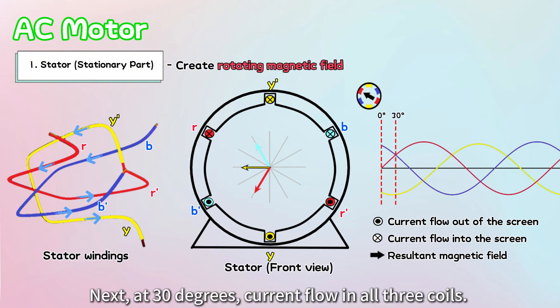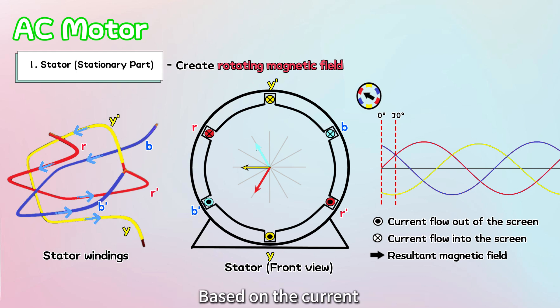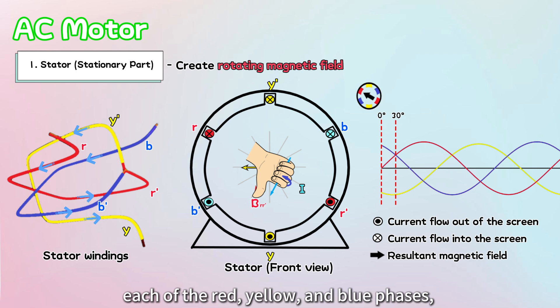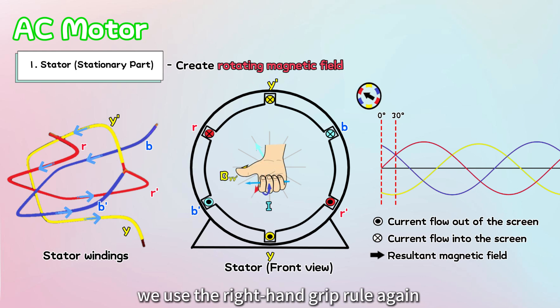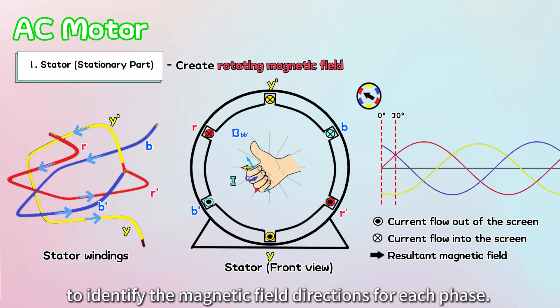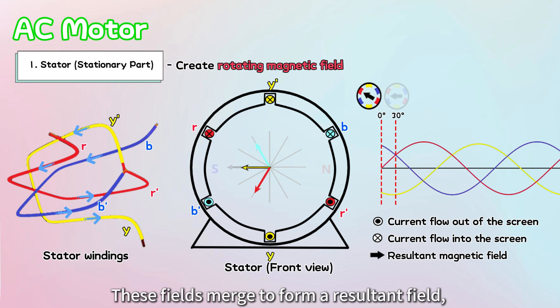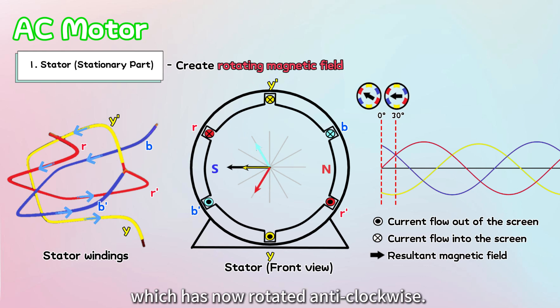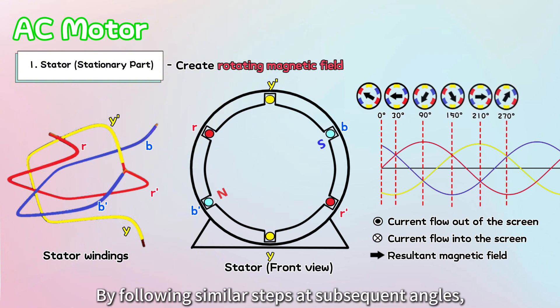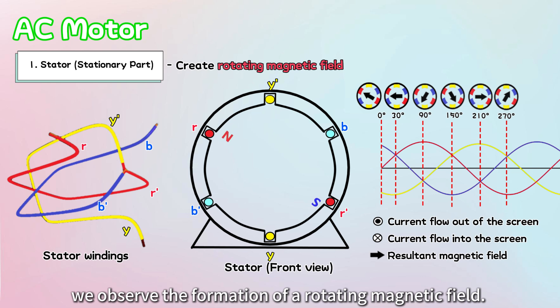Next, at 30 degrees, current flows in all three coils. Based on the current entering and exiting the screen for each of the red, yellow, and blue phases, we use the right-hand grip rule again to identify the magnetic field directions for each phase. These fields merge to form a resultant field, which has now rotated anticlockwise. By following similar steps at subsequent angles, we observe the formation of a rotating magnetic field.